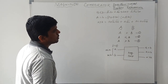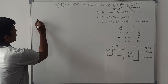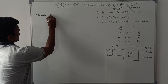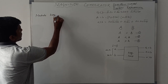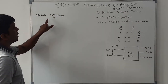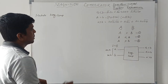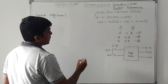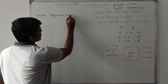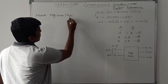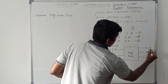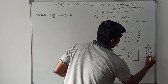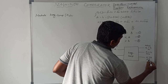Using the Boolean expressions, I am going to write the Verilog HDL code using the data flow model. First, write the module keyword, then the module name — magnitude comparator. Within the brackets, mention the input variables A and B, and the output variables: A equal to B, A less than B, and A greater than B.